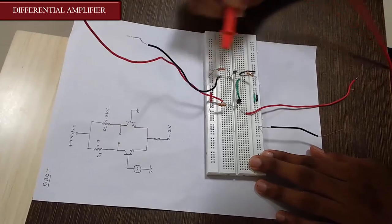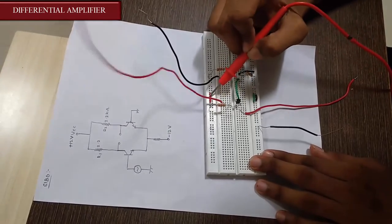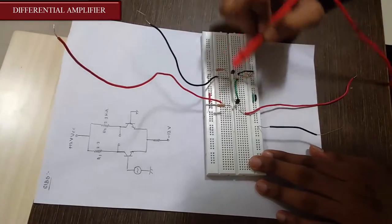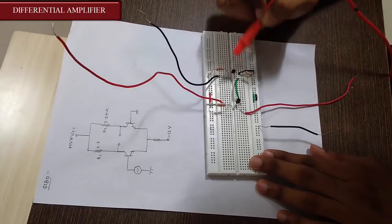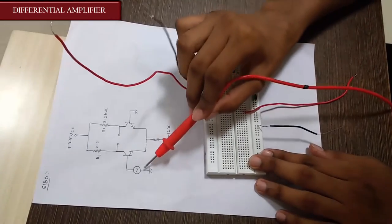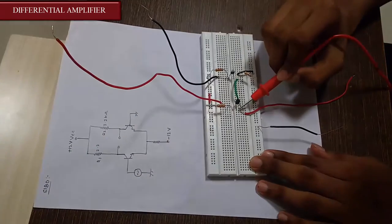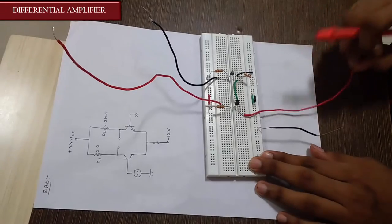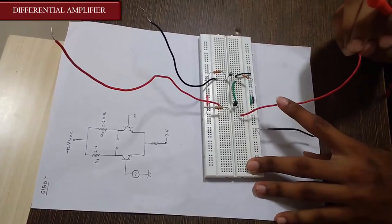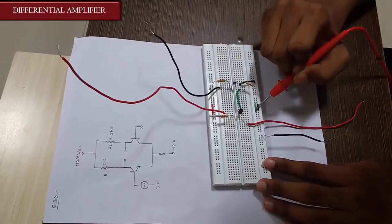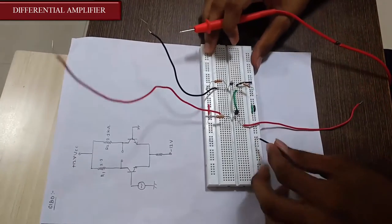This red wire represents the VCC of 12 volts given to the resistors connected to the collector terminals. The input voltage is given to the base of one transistor, shown by this connected wire. The base of the other transistor is connected to ground, indicated by this black wire.